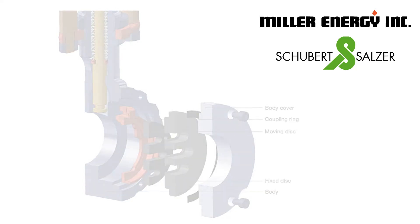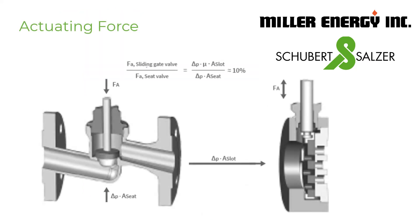The outstanding feature of the sliding gate valve is the actuating force, which is approximately 10% of that required to actuate a globe valve of the same nominal size and the same differential pressure. This permits the use of much smaller actuators, even though both designs of the same nominal size have about the same flow rate. This beneficial feature stems from the fact that closure is transverse to the flow direction in the sliding gate valve, not against it as with the globe valve.